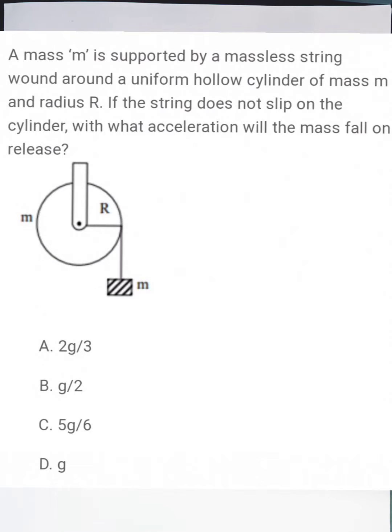A mass m is supported by a massless string wound around a uniform hollow cylinder of mass m and radius R. If the string does not slip on the cylinder, with what acceleration will the mass fall on release?